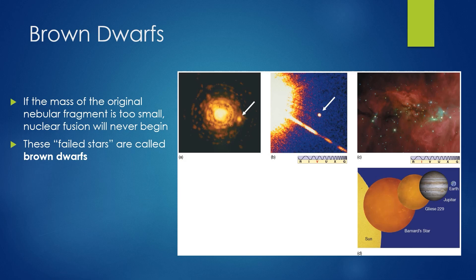Brown dwarfs are very fascinating because we can't really see them — it wasn't until the 1980s or 1990s that scientists were actually starting to see brown dwarfs. If the mass of the original nebula fragment is too small, nuclear fusion will never be able to begin, and these failed stars are known as brown dwarfs. A lot of times brown dwarfs form because you have so many supergiant O or B type blue stars. Scientists believe that these failed stars or brown dwarfs look more akin to our gas giants such as Jupiter, even though we've never actually been able to see one.